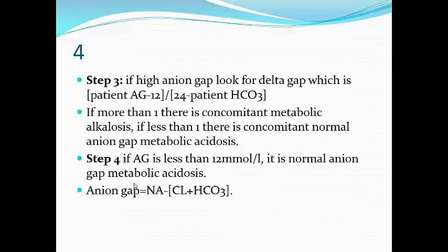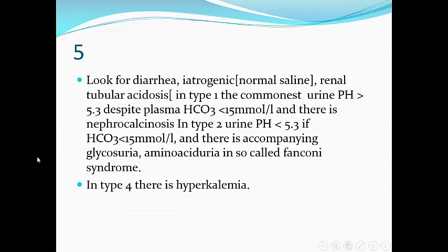Step four: if the anion gap is normal, look for the common causes of normal anion gap metabolic acidosis — which are diarrhea (loss of bicarbonate through the GI tract), renal tubular acidosis (loss of bicarbonate through the kidney), and iatrogenic causes such as adding chloride to the circulation, which decreases bicarbonate because the body compensates by decreasing bicarbonate when chloride increases, and vice versa.